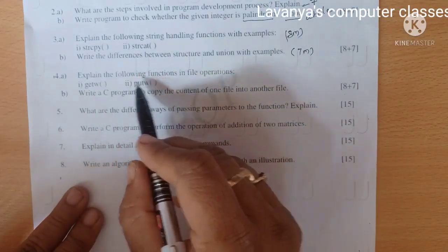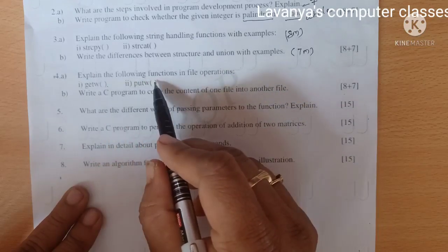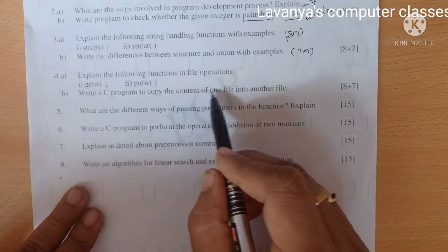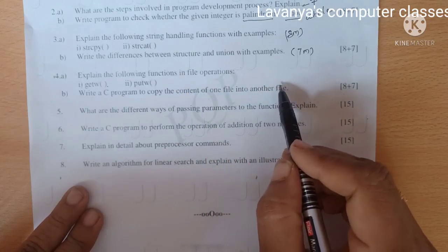B part is write the differences between structure and union with examples. That is a 7 marks question. Just write what is the structure and what is the union with examples.